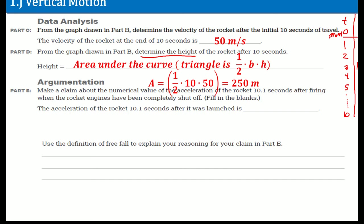Now it says: make a claim about the numerical value of the acceleration at 10.1 seconds after it fires the rocket. The acceleration of the rocket at 10.1 seconds after launch is what? Please understand that at 9.99 seconds, the acceleration was positive 5 meters per second squared, because that was due to the engine.